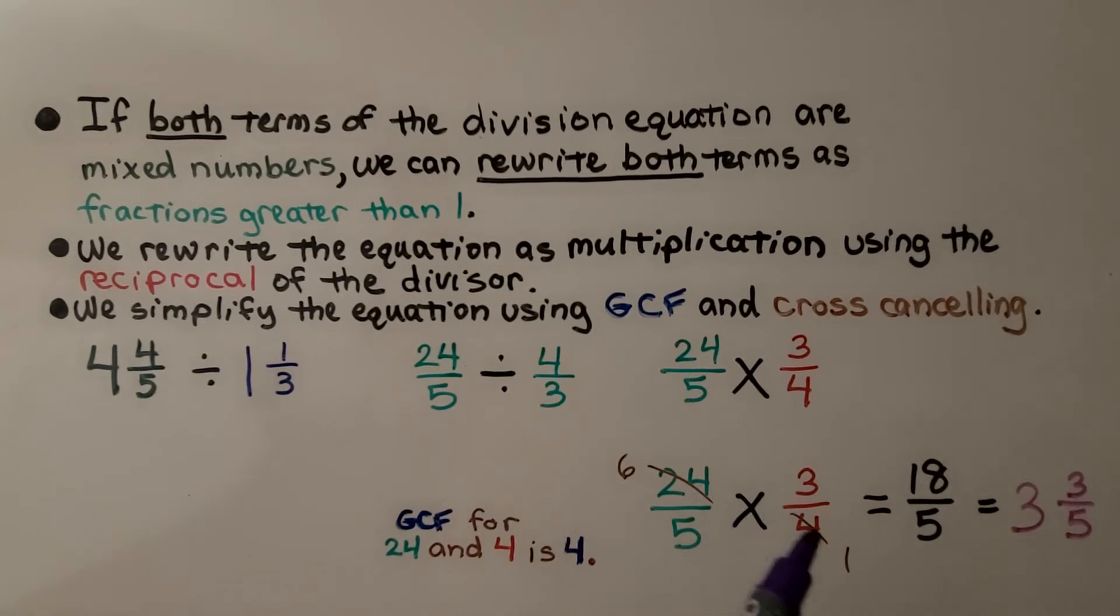18/5 simplifies to 3⅗. We simplify this as 18 divided by 5. How many 5s fit into 18? 3 of them, and there's ⅗ left over, we have 3⅗.